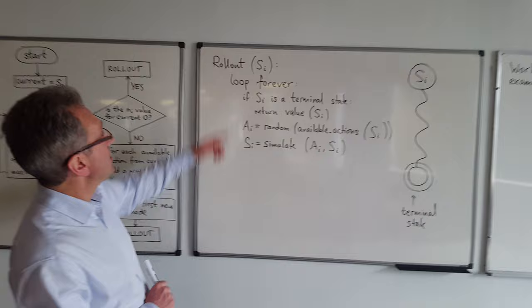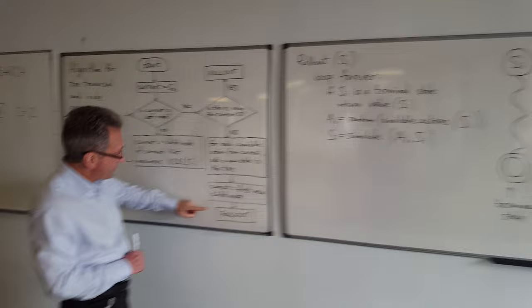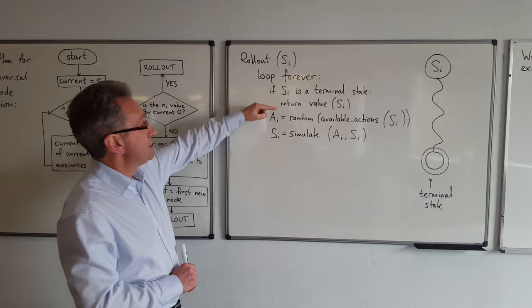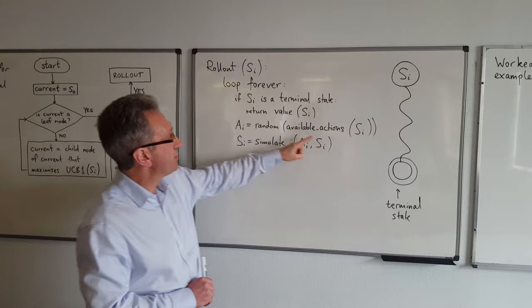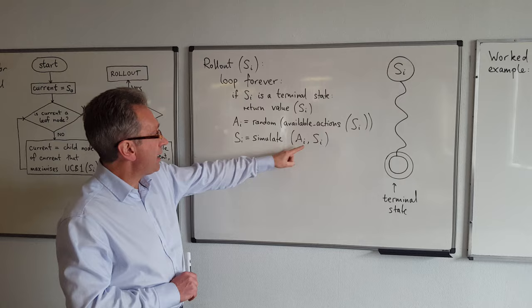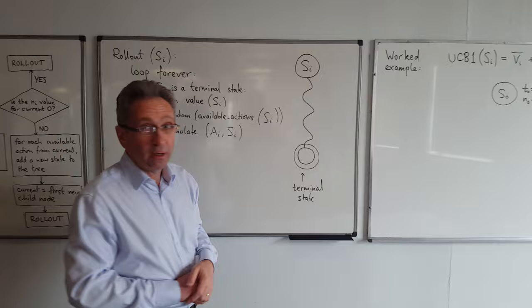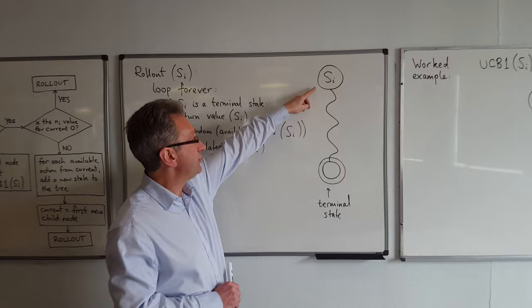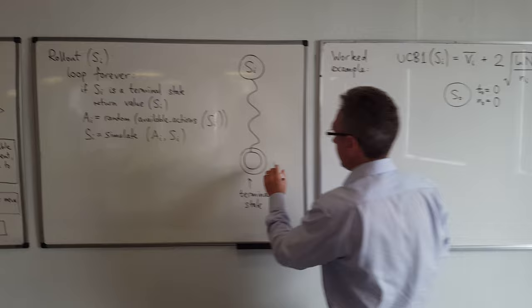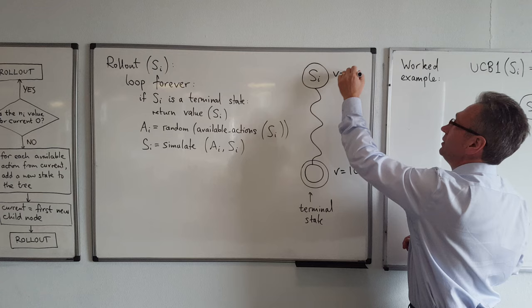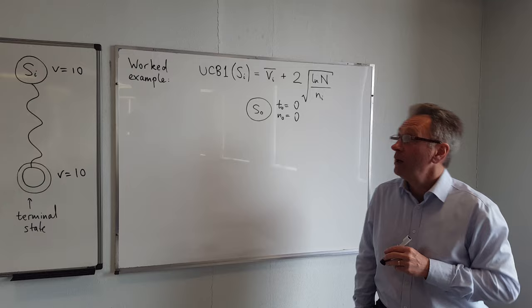The rollout process is very simple. It takes the state you got to at the end of the traversal process. If it's a terminal state, you simply return the value. Otherwise, you choose a random action from the available actions of that state, simulate it, and that becomes the new current state. You loop until you get to a terminal state. In the diagram, the leaf node leads via random simulation down to a terminal state, which has some value — say v equals 10 — and that is used as an estimate of the value of that state.